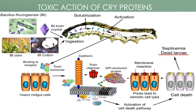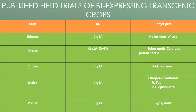Inside the bollworm, the crystals get solubilized and activated. The toxin monomer binds to insect midgut cells, where it starts to produce pores, leading to osmotic cell lysis and activation of the cell death pathway, causing the larva to die.